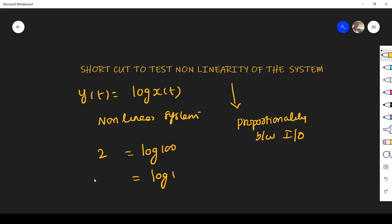As per linear system, my output should be reduced by 100 times. But this will not happen because log 1 = 0. So there is no proportionality. Since proportionality fails, surely it is a nonlinear system. That is the way.